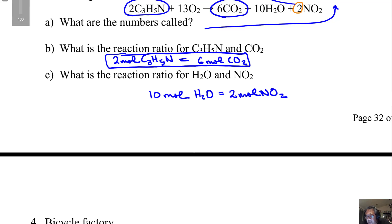So there's the reaction ratio for H₂O and NO₂: 10 H₂Os for every 2 NO₂s. If I had 5 H₂Os, I could only make 1 NO₂. If I produced 4 moles of NO₂, I would have had to use 20 moles of H₂O. So this is the review, the main skills you need from previous chapters to be successful in this chapter.